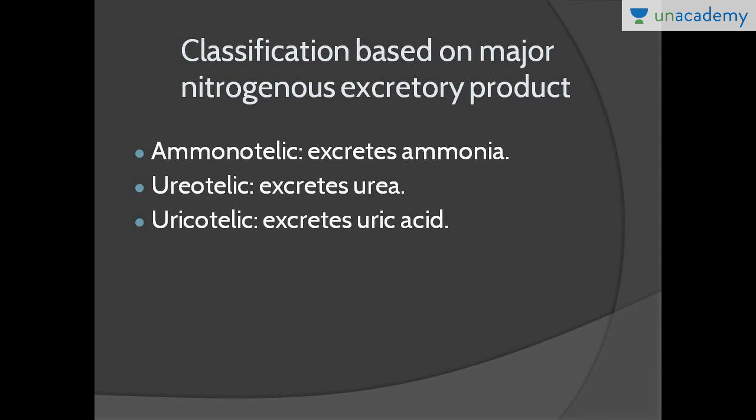Before talking about the human excretory system, in this lesson I will talk about the excretory system in lower organisms. The first classification is based on nitrogenous excretory products, and it is of three types. Organisms that excrete ammonia are called ammonotelic organisms, those excreting urea as their main excretory product are ureotelic.